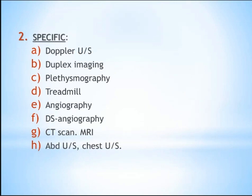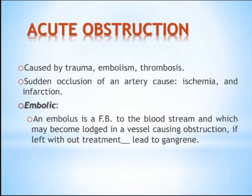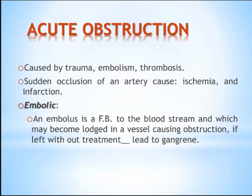Acute arterial obstruction is caused by trauma, embolus, or thrombus. Acute means sudden occlusion of the artery. When we have a sudden occlusion, it leads to ischemia. If not corrected immediately, this ischemia leads to gangrene and, unfortunately, to amputation.